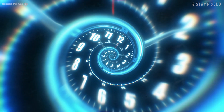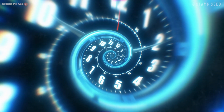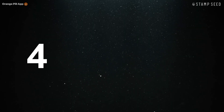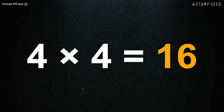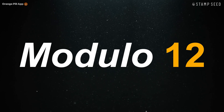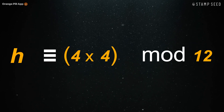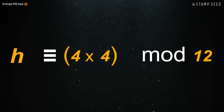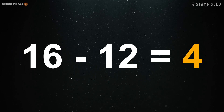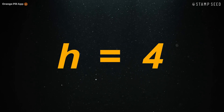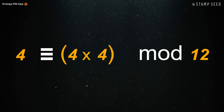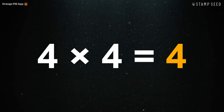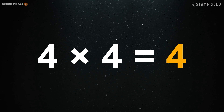Continuing with the example of a clock, 12 is the maximum value in the field. So if we apply multiplication and say 4 times 4, which normally equals 16, but the maximum of the field is 12, then the amount over 12 — the remainder — is what the value is. 16 minus 12 equals 4. The remainder of 4 is your answer, and thus in finite field math with a maximum of 12, 4 times 4 equals 4.